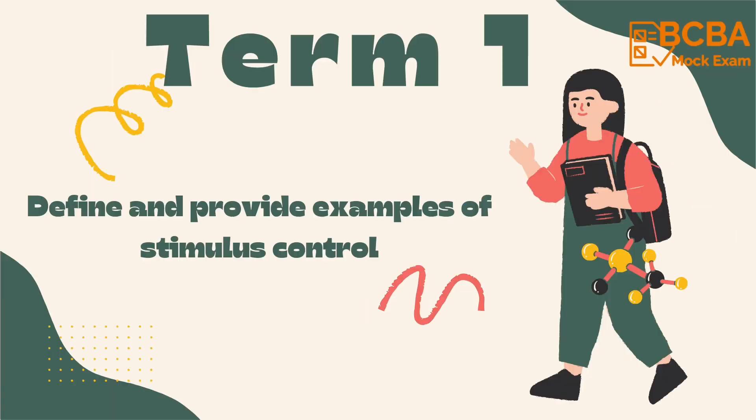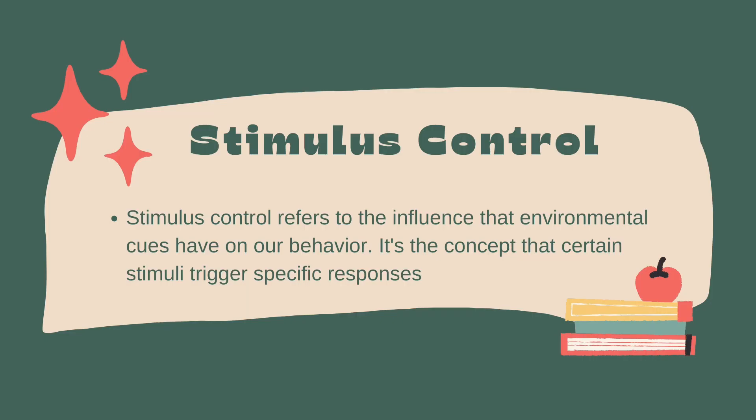Our first term is about stimulus control. Stimulus control refers to the influence that environmental cues have on our behavior. It's the concept that certain stimuli trigger specific responses. When a behavior is emitted more often in the presence of an antecedent than in its absence, because of its history of reinforcement, punishment, or extinction.